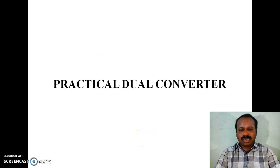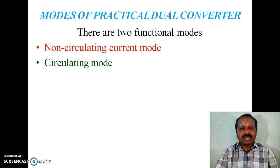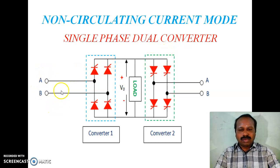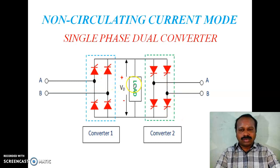Next, practical dual converters. There are two modes of practical dual converters: one is non-circulating current mode and the second is circulating current mode. The diagram shows a single-phase dual converter working in non-circulating current mode, with inputs A and B. Converter 1 is the positive converter and Converter 2 is the negative converter, both connected to a common load. In non-circulating current mode, there are no current-maintaining reactors in either converter.